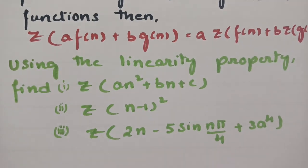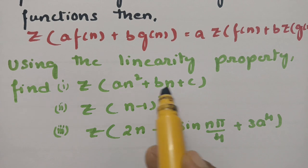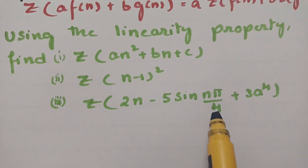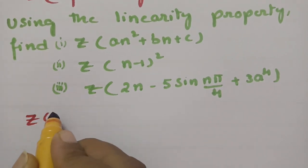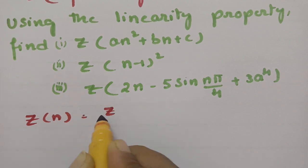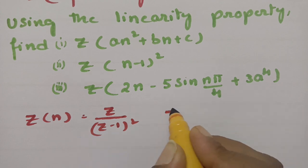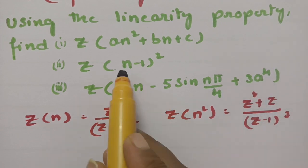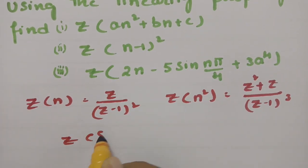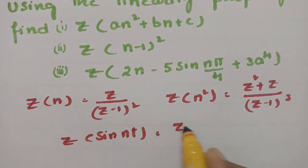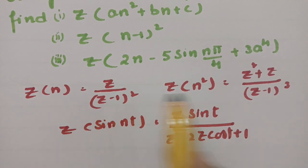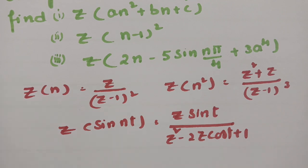Using the linearity property, we have to find the Z transform of: (1) an² + bn + c, (2) (n−1)², and (3) 2n − 5·sin(nπ/4) + 3a⁴. The key formulas to recollect are: Z{n} = Z/(Z−1)², Z{n²} = (Z² + Z)/(Z−1)³, and Z{1} = Z/(Z−1).